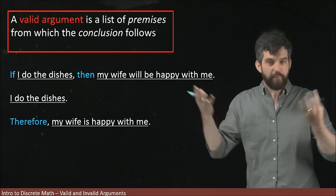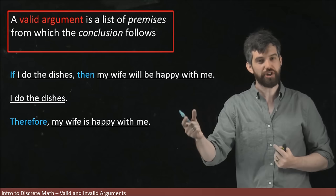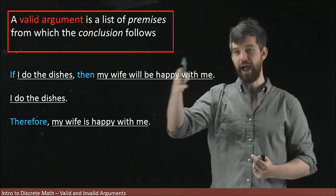Now, both of these premises may not be true. Maybe I don't do the dishes. Maybe this is way too simplistic of a statement to deduce my wife being happy with me. But the logic of it, I think, is sound. If I have this one thing, if I have this hypothesis, then I get the conclusion. I'm assuming that I do have the hypothesis. Therefore, I do get the conclusion, and I have this structure.